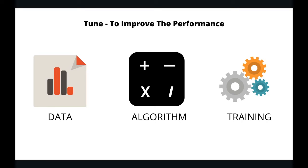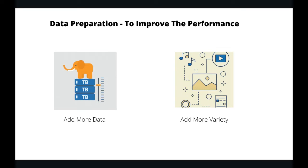To improve the performance, there are three main aspects we can look at: data, algorithm, and training hyperparameters. In terms of data, there are two things we can do - either we can add more data or we can add more variety of data.